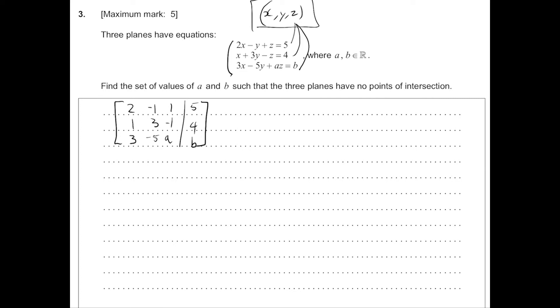So we're first going to try to reduce these entries into zeros. This is called the reduced echelon form, and that's going to help us read the solutions directly off the matrix. And we're going to try to see what the conditions for a and b are, so that there's no points of intersection.